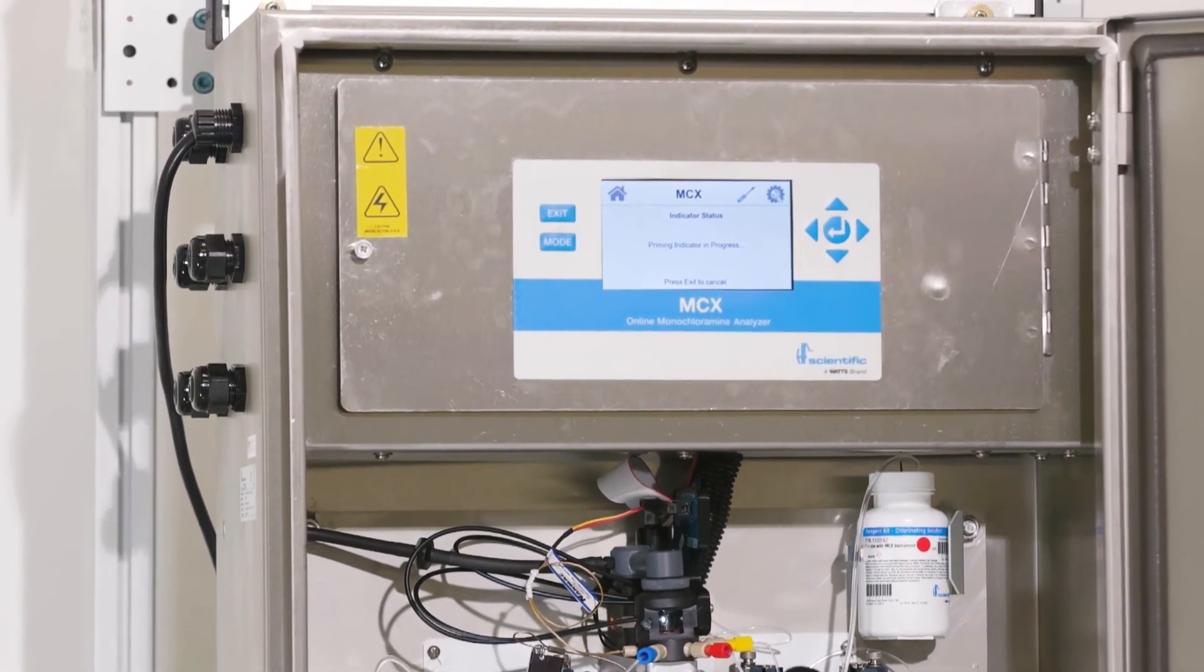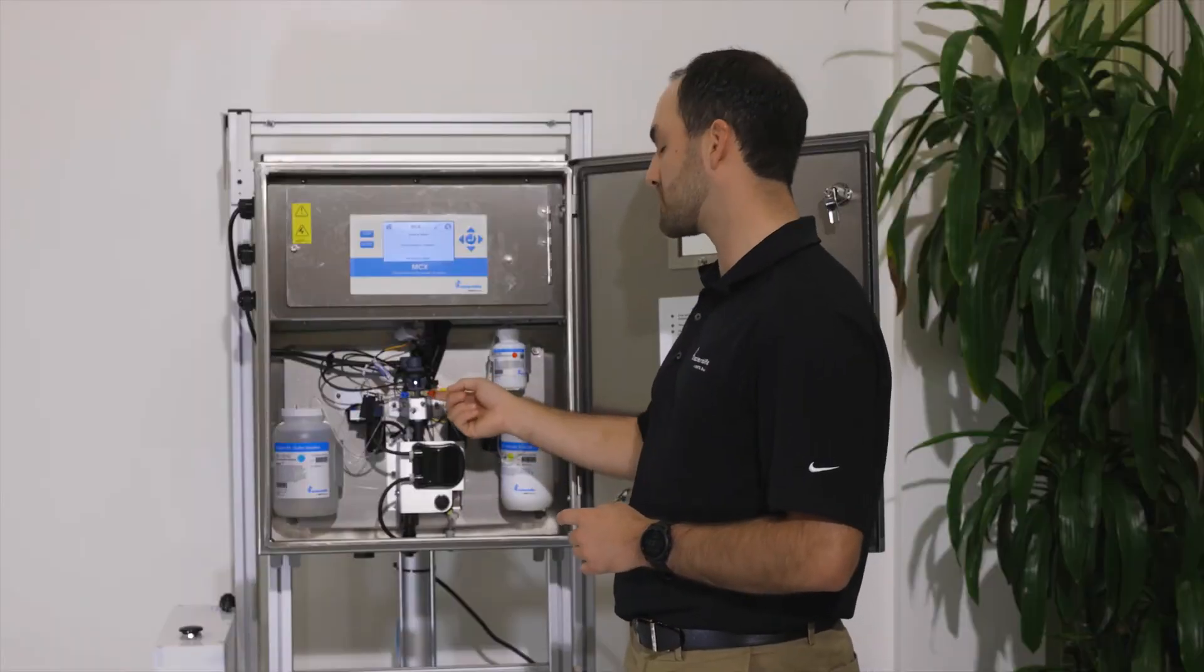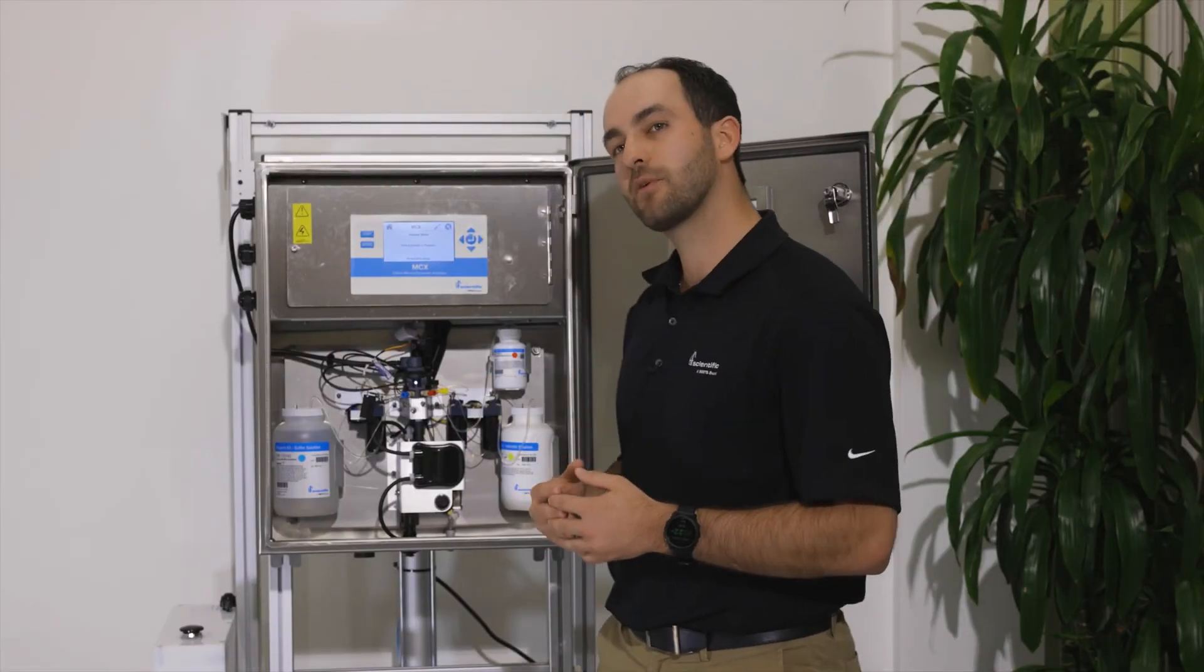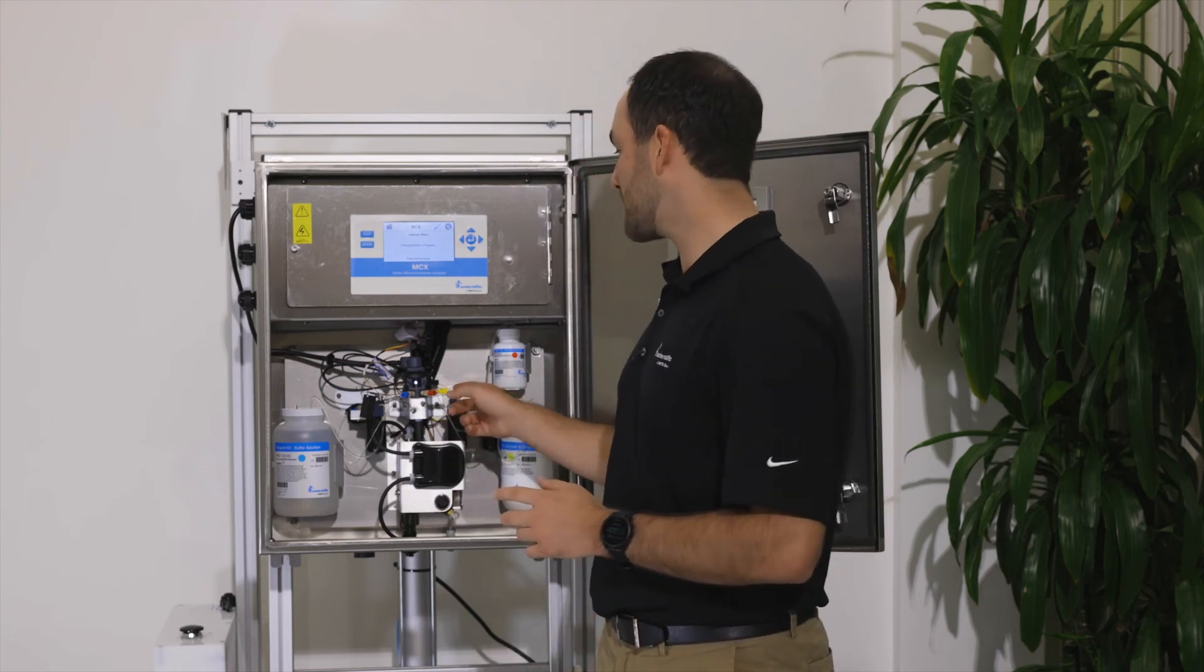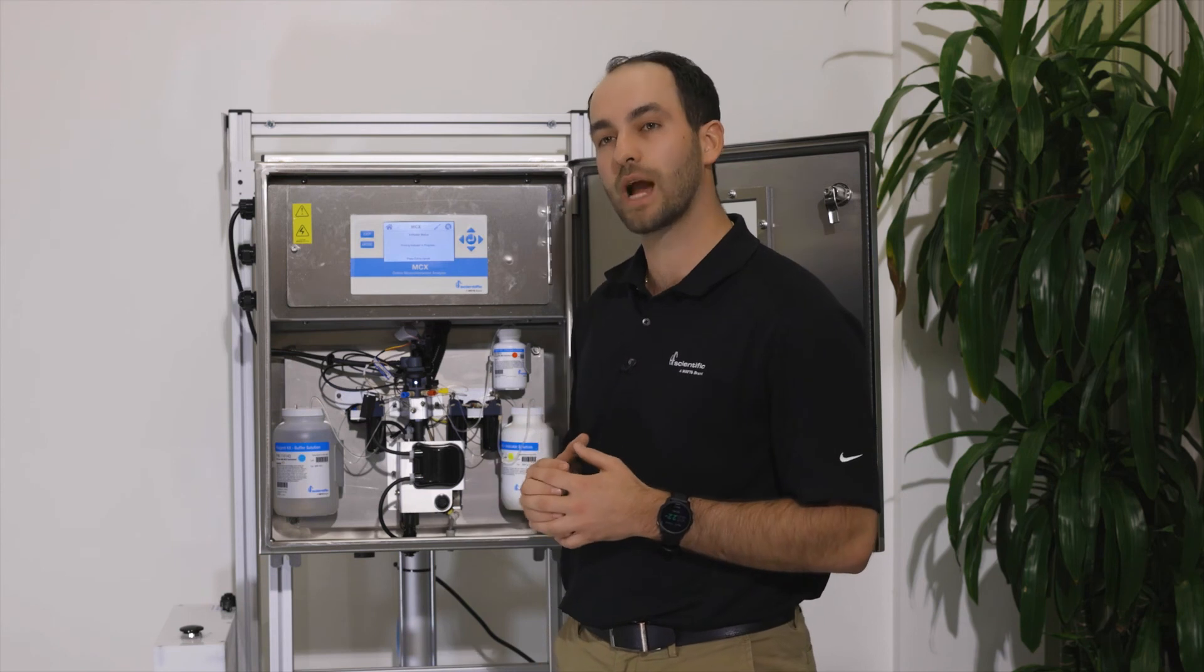When the indicator is priming, it's very easy to see as the dark color moves through the lines and into the sample cell. If at the end of the priming cycle, which is about 90 seconds, you do not see the indicator all the way into the optical block, you may need to prime the unit again.